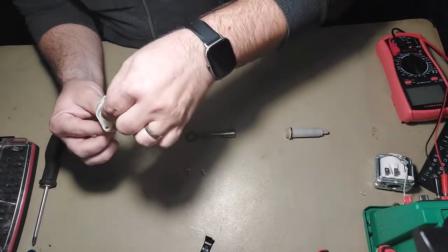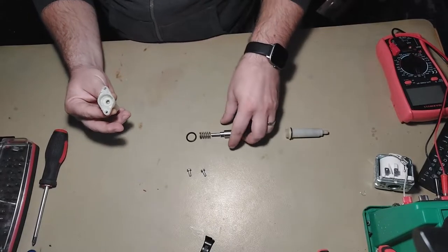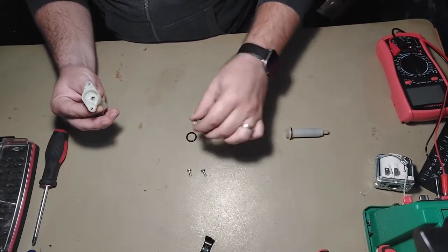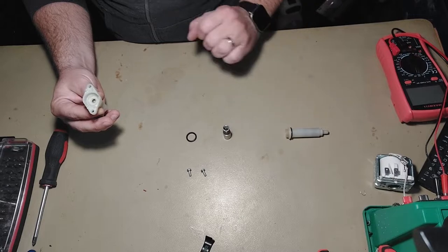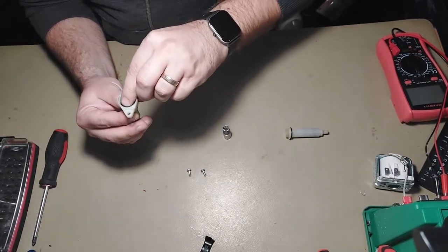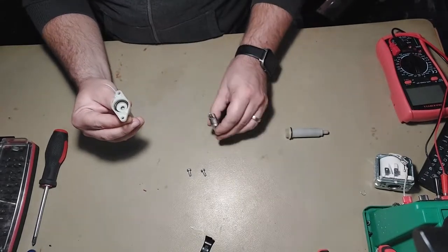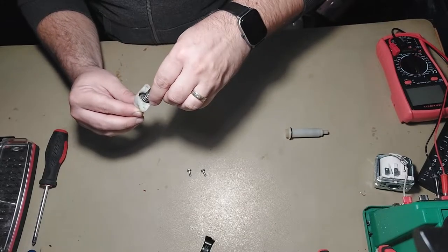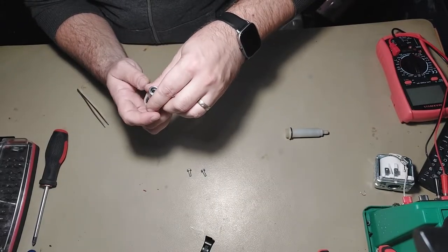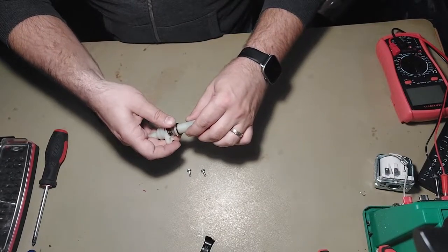Take the plastic washer, put it in the middle like that. Take the piston, the spring on it, the o-ring, put it here. Then this spring here. And now we can put all together.